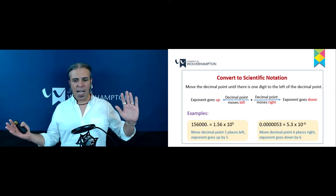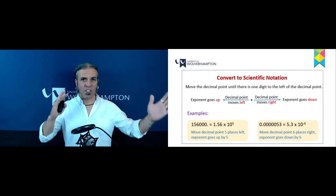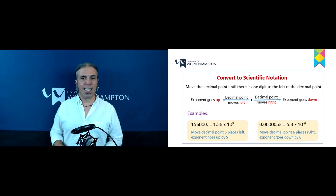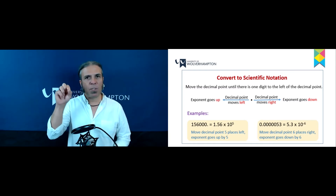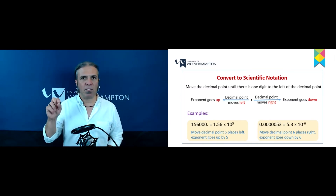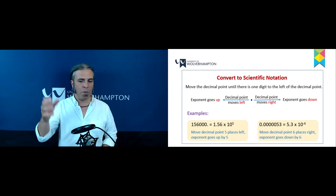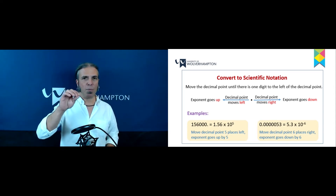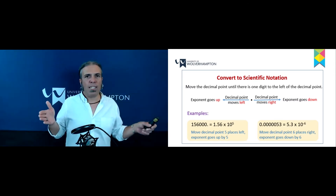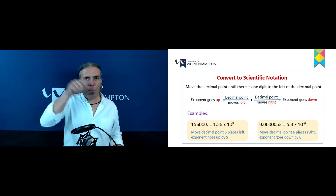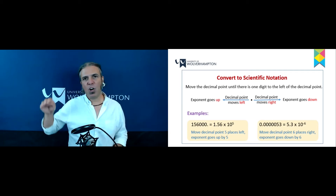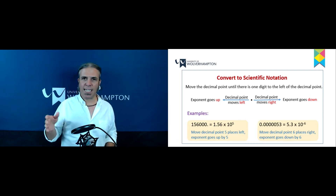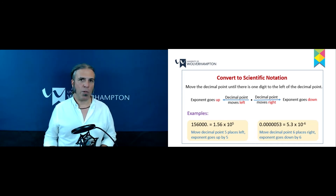To convert a large number to scientific notation, all you have to do is move the decimal point to the left. In the example, we've got 156,000 — the decimal point is at the end, so it would be 156,000.0. To express that in scientific notation, we move the decimal point five places to the left, giving us 1.56. Every time we move the decimal point, we change the exponent by the same number of places — so we end up with 1.56 × 10⁵.